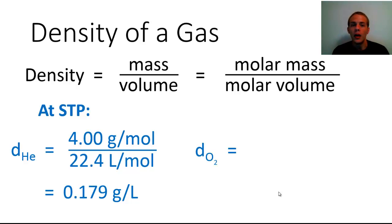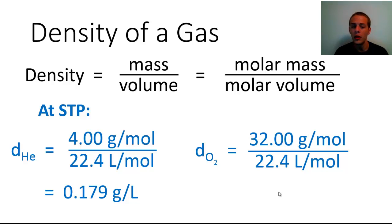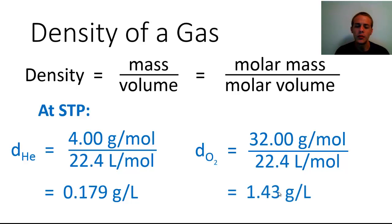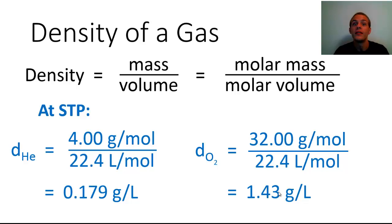For oxygen gas, O2, it's just the molar mass of O2 — 32.00 grams per mole — divided by 22.4 liters per mole. The mole terms cancel and we get 1.43 grams per liter. So oxygen gas is heavier than helium. If you had a container with both, you'd expect the helium to float on top of the oxygen because it has a lower density.